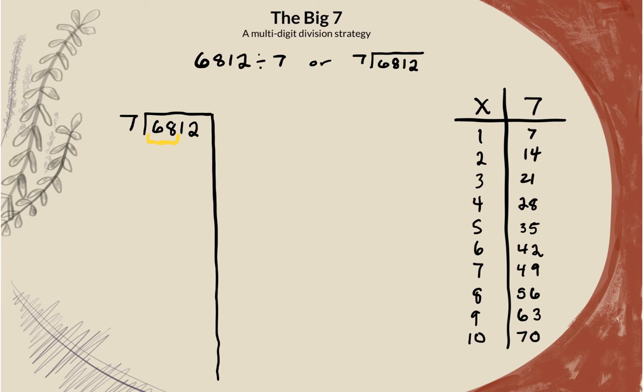Now I'm going to go over to my multiplication table over here, and I'm going to start at seven, and I'm going to work my way down, looking for a number that is close to 68 without going over it. So I see 63. When I look down here, one further, that's 70. 70 is too large. So I know that I want to use 63.